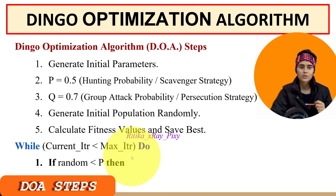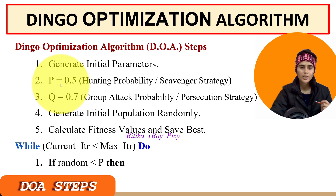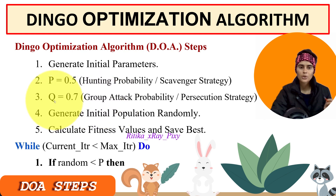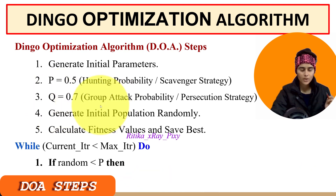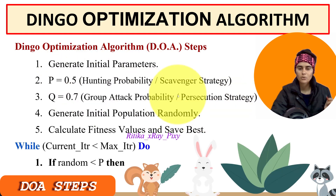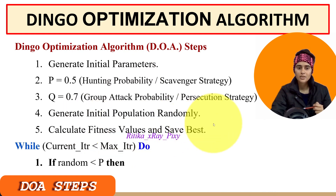Step by step, we first generate initial parameters. We have two parameters: p and q. The value p is used to check the probability of hunting or scavenger strategy, and q is used to check the probability of group attack or persecution strategy. These parameters are used to simulate dingo hunting behavior. After that we initialize the population randomly in the search space.